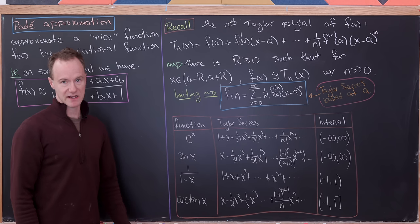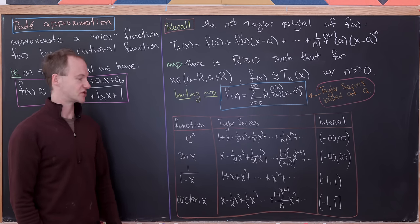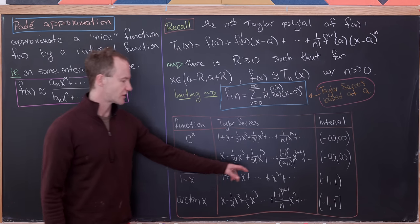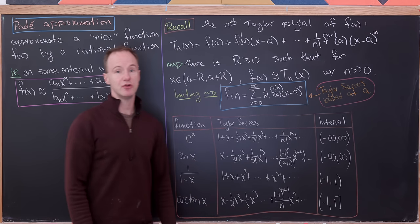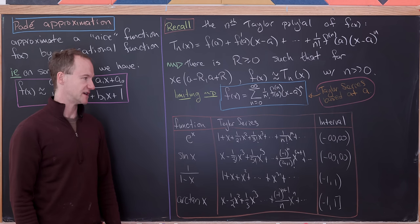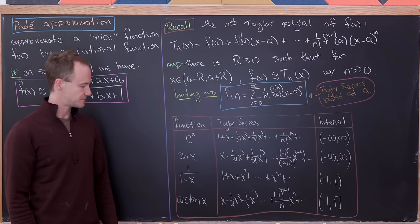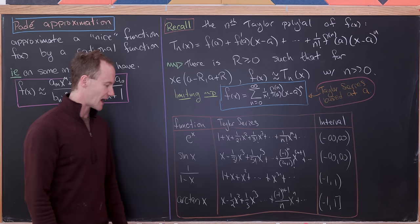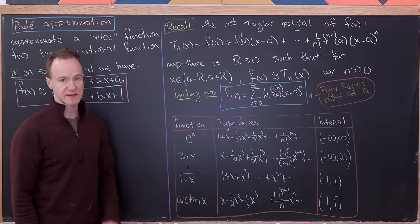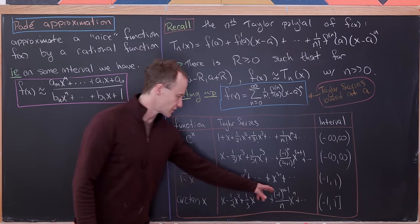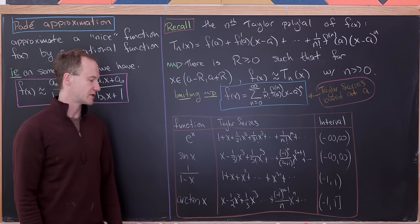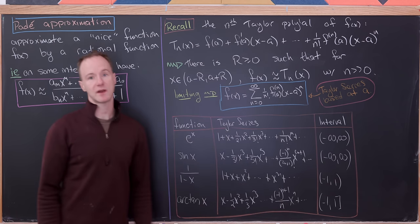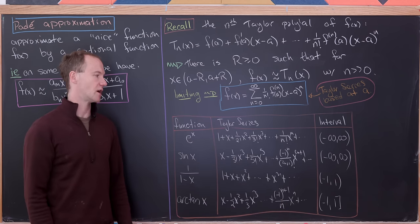For 1/(1-x), that's just a standard geometric series: 1 + x + x^2 + ..., with general term x^n, converging on the open unit interval. For the inverse tangent, we have x - (1/2)x^2 + (1/3)x^3 - ..., with general term (-1)^(n+1)/n · x^n, converging on the interval open on the left and closed on the right.